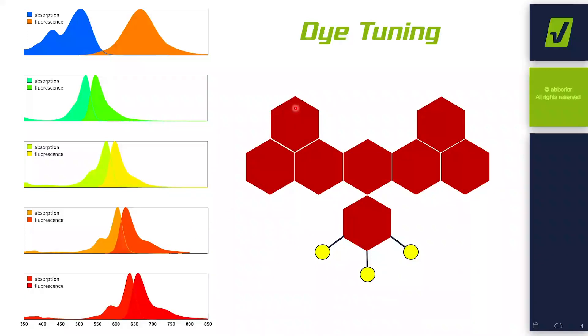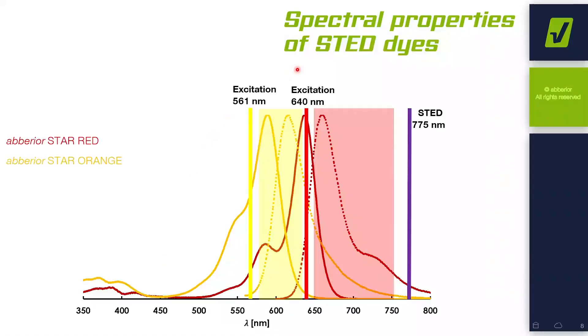We can increase the whole pi system by adding or increasing the ring system of our dye. We can also add halogens to the benzoyl ring, creating a dye with a red or even infrared emission spectrum. All these dyes can be combined, of course, for not only single-color but also two or multiple-color imaging. I will show you a pair of fluorophores which can be nicely used in our STED systems.